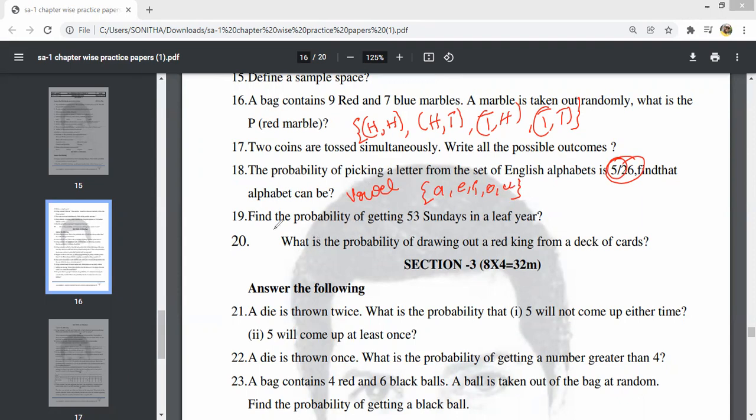Find the probability of getting 53 Sundays in a leap year. A leap year has 366 days. Divide by 7: 366 divided by 7 gives 52 with remainder 2. So 52 complete weeks plus 2 days out of 7. The probability is 2 by 7.